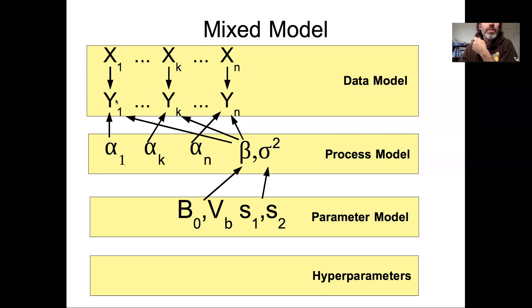We would have our random effects, which describes the variability, potentially the variability in intercepts or the variability in slopes from data set to data set, or the variability in both slopes and intercepts.